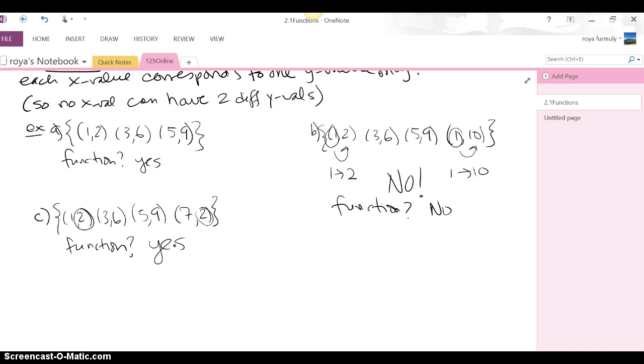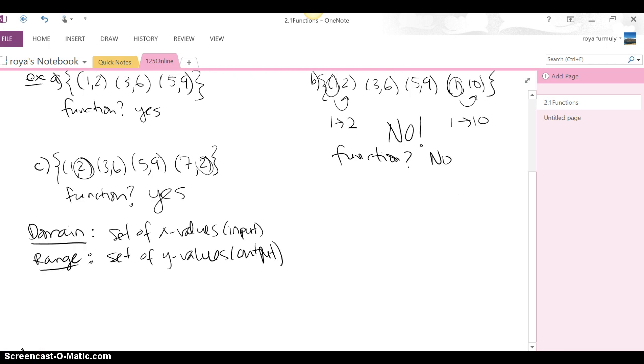And some more terminology, the domain of a function is the set of all the x values or the inputs. We'll see later why I call them inputs. And the range is the set of all y values or the outputs. So I say the set of x values and y values. Remember, all that means is the set of the first values and the set of the second values. They don't necessarily have to be called x and y.